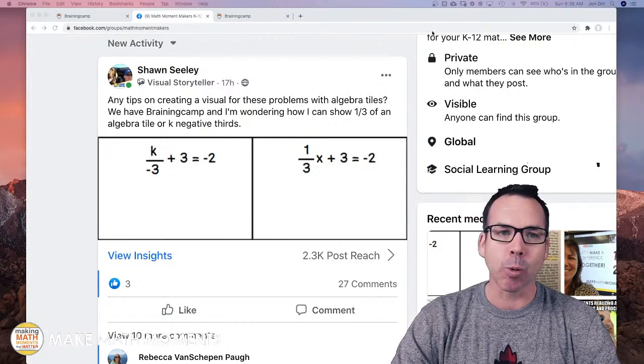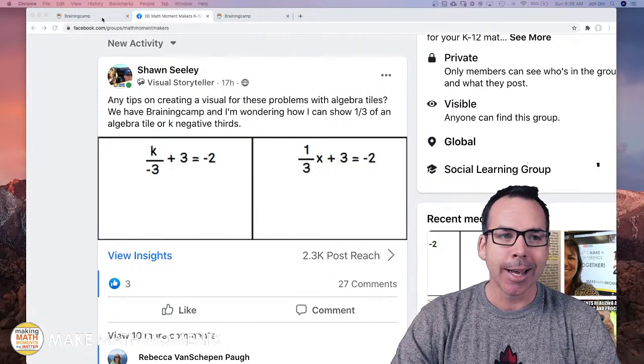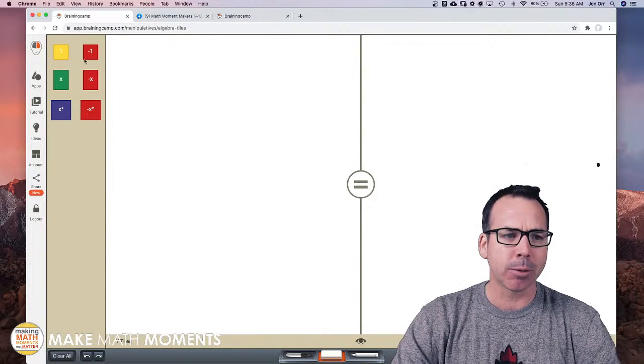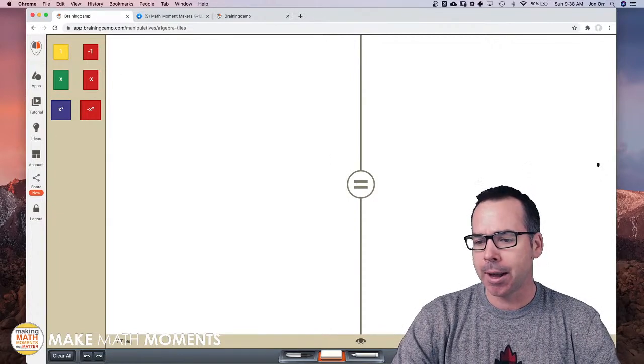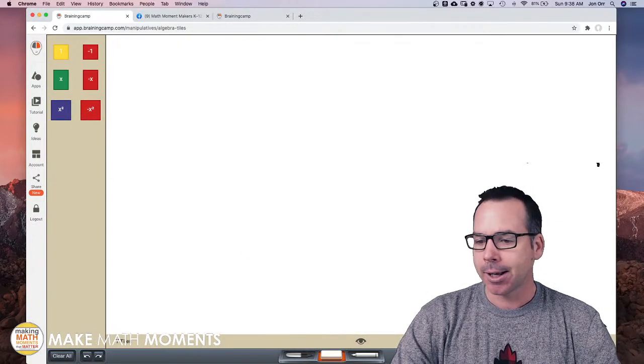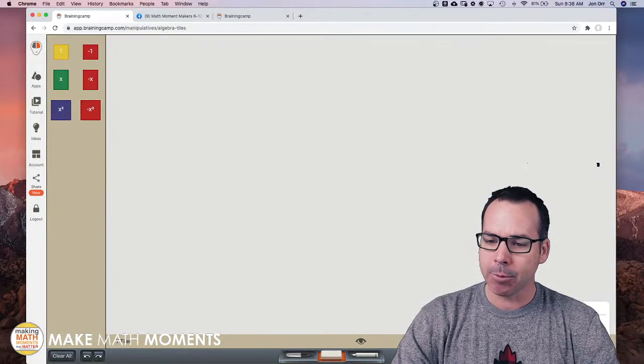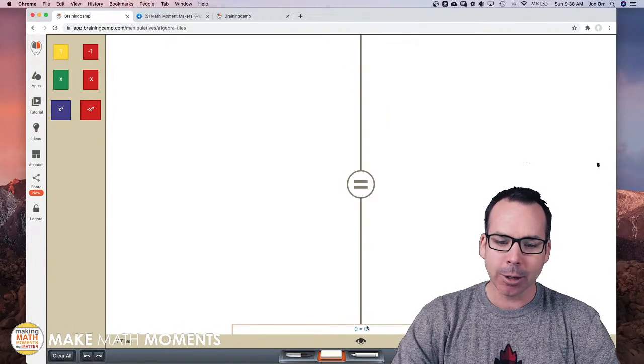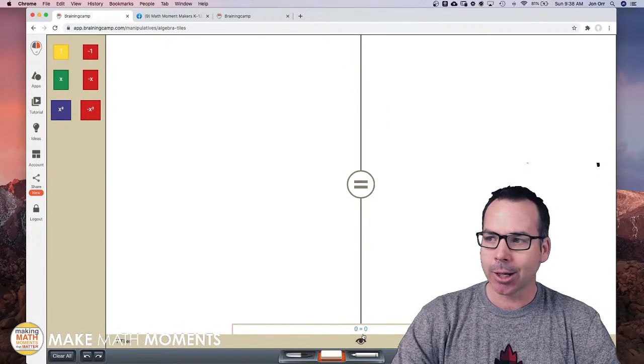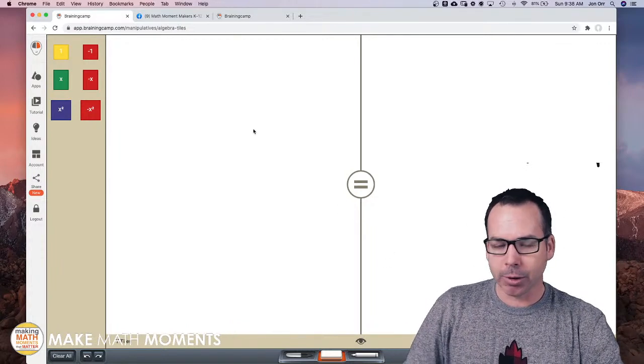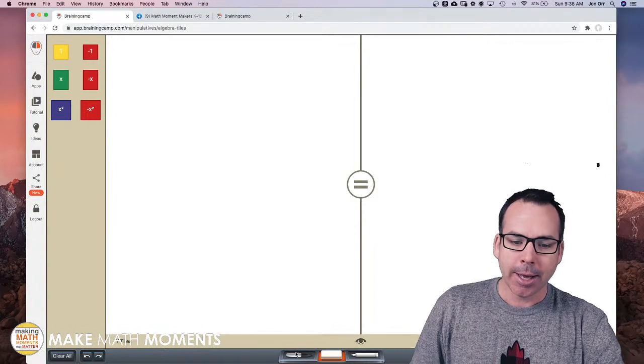Let me jump right in. I'm using a tool called Braining Camp. I've set up the Braining Camp - notice we got our algebra tiles over on the side here. You can change the type of canvas you have. I'm going to go to solving, which basically just puts a line down the middle. You've got your eye window down here in the corner - I'm turning that off just so we don't see the equations with our students.